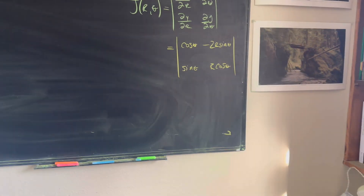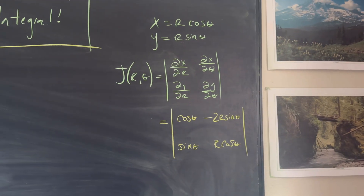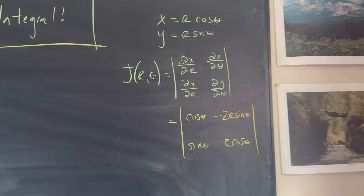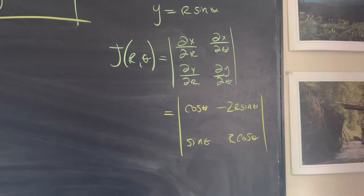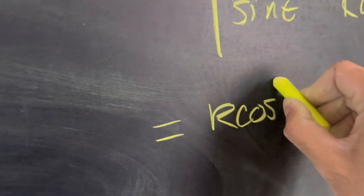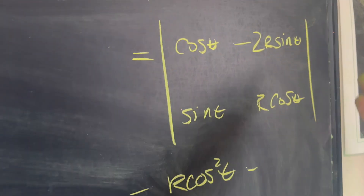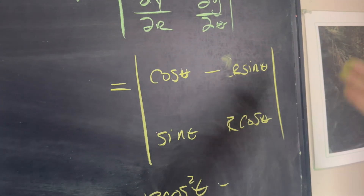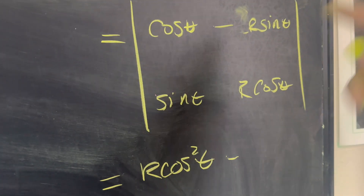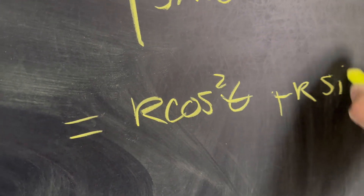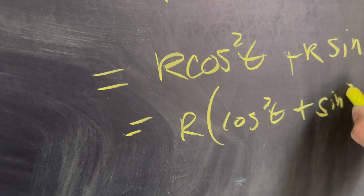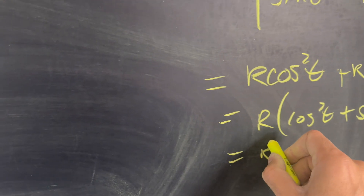Taking the determinant, we have r cosine squared theta minus (negative r sine theta times sine theta), which is plus r sine squared theta. Factoring out r gives us r times (cosine squared theta plus sine squared theta), which equals r. So our Jacobian is r — every sector stretches by a factor of r as we change variables.